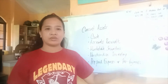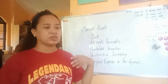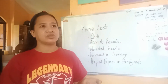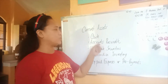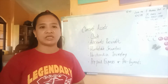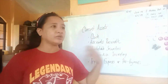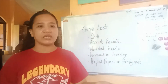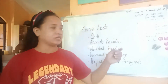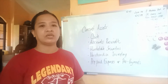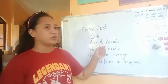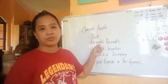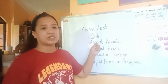When we say accounts receivable, it is the thing that we already sold but have not yet collected. When we sell those items, we debit accounts receivable and credit sales. Upon collection, we debit cash and credit accounts receivable. But when talking about the original entry, the original entry of accounts receivable is always on the debit side.